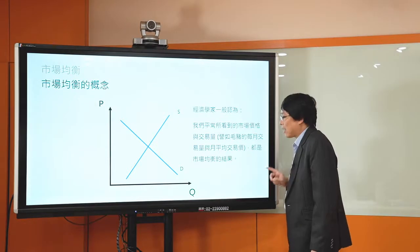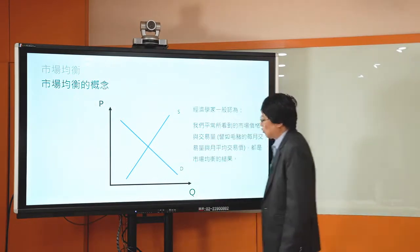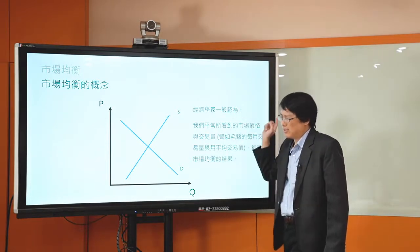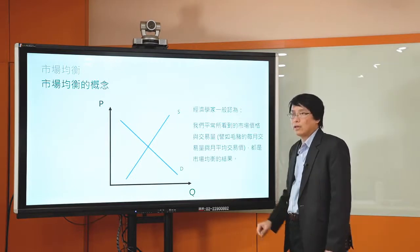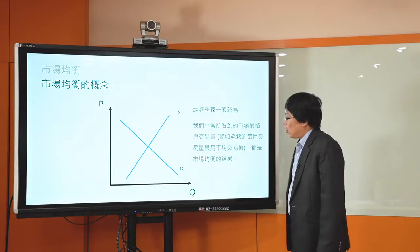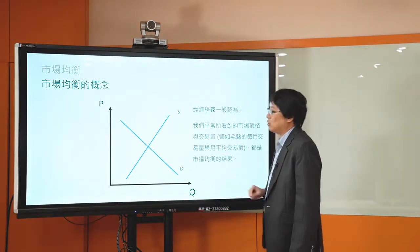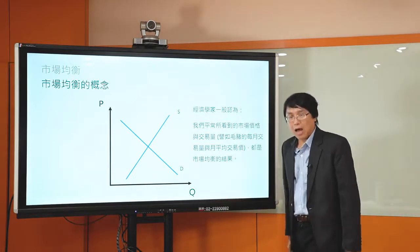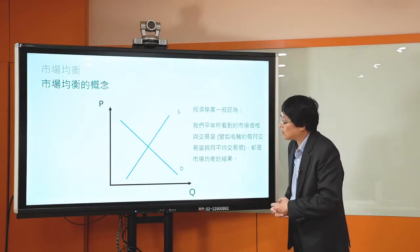怎麼達到這個均衡？我們會覺得說在那一天的交易裡面，很快大家就達到這個均衡。你可以用我剛剛說的那個方式來想。當然實際上具體面在市場裡面，比如說在股票市場、金融市場裡面，買賣雙方怎麼快速達到這個均衡，這比較涉及先進的領域，牽涉到市場微觀結構。你在現階段就知道說，反正它就達到這個均衡了，我們平常看到的市場價格跟交易量就是均衡的結果。